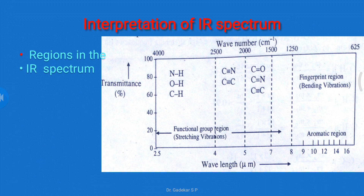Next is the interpretation of IR spectrum. The IR spectrum shows three regions: the first is the functional group region, the second is the fingerprint region, and the third is the aromatic region. This spectrum is plotted as wavelength versus transmittance. In the functional group region, we observe absorption frequencies of functional groups such as NH, OH, and CH.